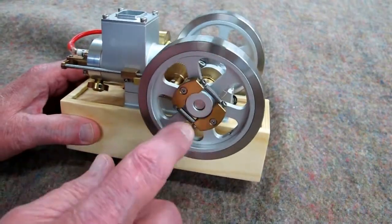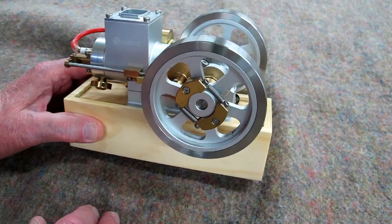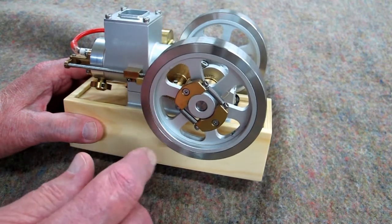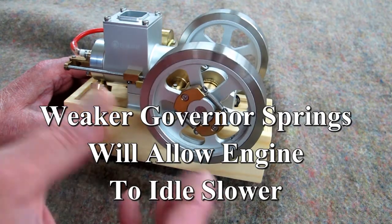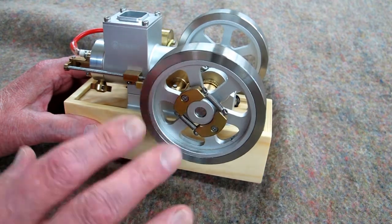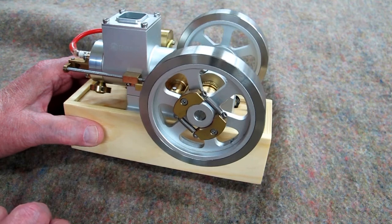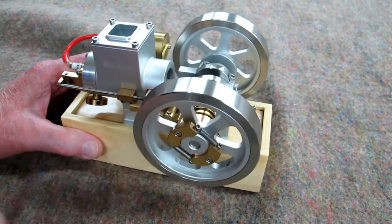These are still the original springs that came on the engine on my vertical hit and miss. I have a video where I show where I've replaced these with a smaller, lighter, lighter tension spring. And it will slow this down and make it idle even slower. I haven't done it on this one yet.